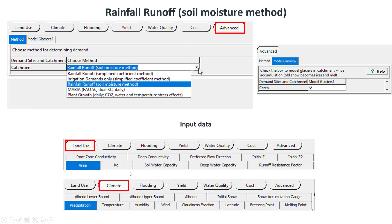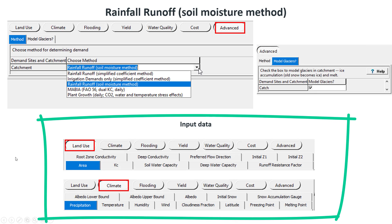The method is selected for each catchment in the data view in the advanced method tab. The variables appear depending on the chosen method.